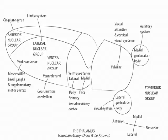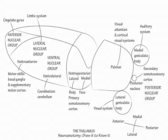Ventral and posterior to the thalamus itself, label the posterior thalamic nuclear group. It comprises a widespread conglomeration of nuclei. Here we will only draw one tiny nucleus — the posterior nucleus — which attaches to the posterior tip of the thalamus. Show that it projects to the secondary somatosensory cortex and the inferior parietal lobe, which is involved in cortical processing of pain and temperature sensation.